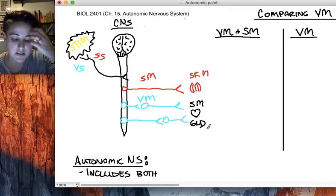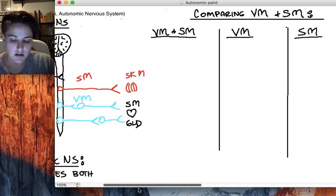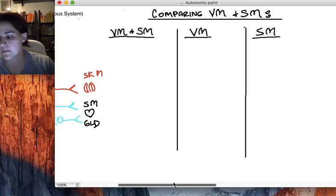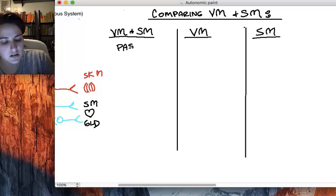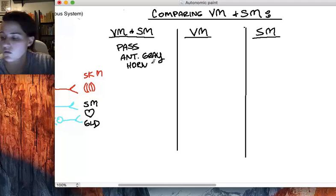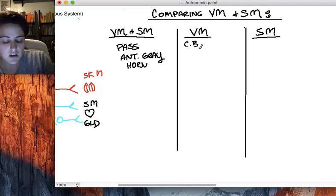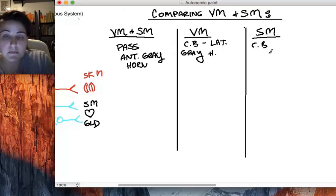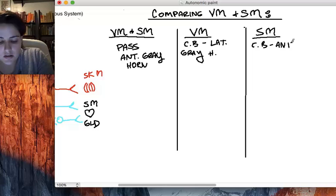Let's compare these two: visceral motor and somatic motors. What do they have in common? They both pass through the anterior gray horn of the spinal cord. Visceral motors, their cell bodies, the collection of cell bodies, are in the lateral gray horns. Whereas the cell bodies of the somatic motor neurons are found in the anterior gray horns.